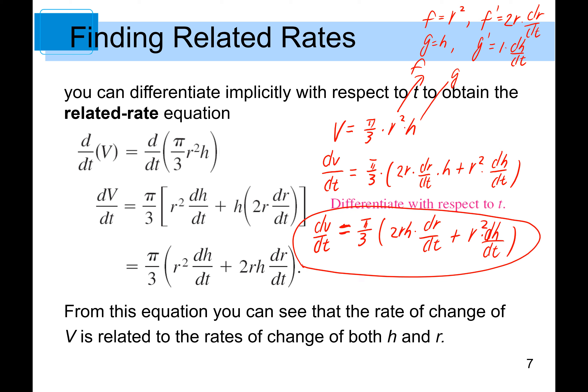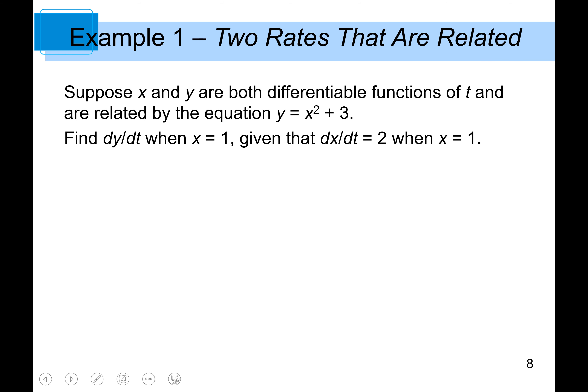From this equation you can see that the rate of change of V is related to the rates of change of both R and H. Now suppose that x and y are both differentiable functions of t and are related by the equation y = x² + 3. Find dy/dt when x = 1, given that dx/dt = 2 when x = 1.